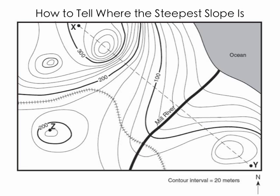Let's talk about how we can determine where the steepest slope is using a topographic map. Here's a fairly complicated topographic map. We have several index contours — two 200 index contours and one 300 index contour. We have a river flowing into the ocean, what looks like railroad tracks, and two points X and Y.